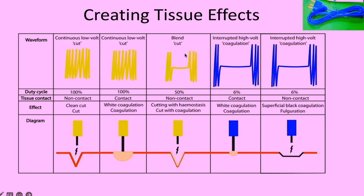If you activate the cut button and the surgical pencil is slightly away from the skin, it causes a clinker tissue effect. If you come in contact with the skin, it causes a white coagulation effect. When you activate the blue coagulation button without contact with the skin, it causes a superficial black coagulation effect. The waveform is interrupted and pulsed, active only 6% of the time, giving enough time for the coagulum to form on the tissue to stop bleeding.